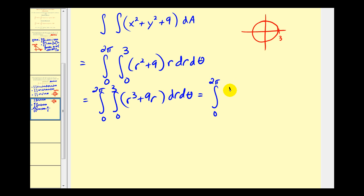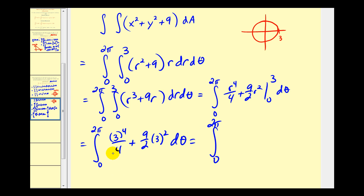So we're going to have r to the fourth over four plus nine halves r squared. Replacing r with three, and then when r is zero, we'll have zero. We've got the d theta here.